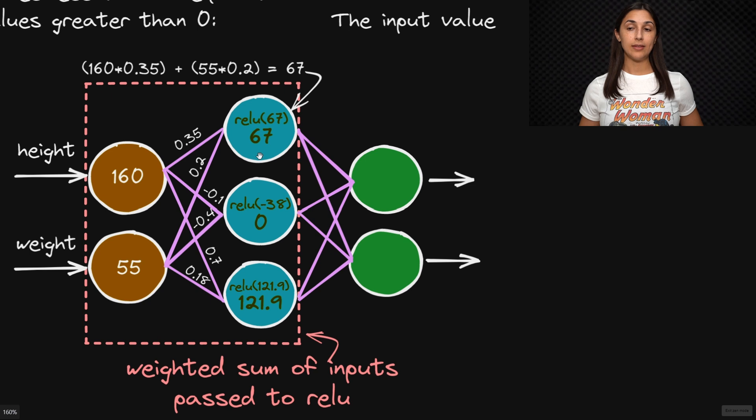So this is the final output, the activated output from this node, which will then be passed as input to the next layer.